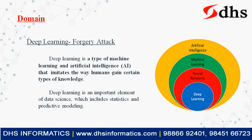This technology comes under deep learning, specifically forgery attack detection. Artificial intelligence is the superset; under AI comes machine learning; under machine learning comes neural networks; and under neural networks comes deep learning. All deep learning projects are machine learning projects, and all machine learning projects are artificial intelligence projects. In this project, we use deep learning — specifically Convolutional Neural Network and Error Level Analysis — to identify document forgery attacks on images.